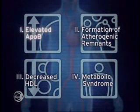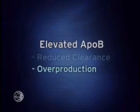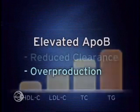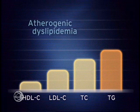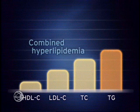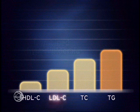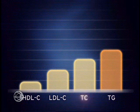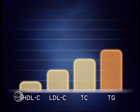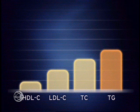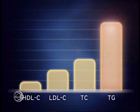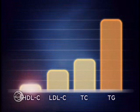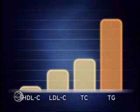Elevated ApoB particles may also be caused by overproduction. The common example of this condition is atherogenic dyslipidemia, also known as combined hyperlipidemia. LDL cholesterol and total cholesterol levels may be overtly elevated or deceptively normal, while triglycerides are elevated and HDL is often reciprocally low.